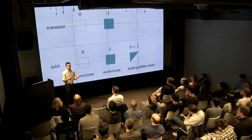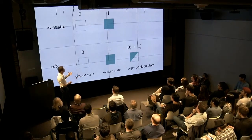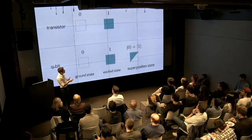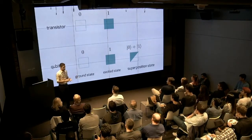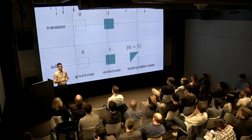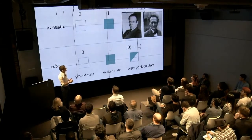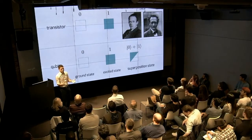Physicists like to use fancy notation. Instead of writing just zero and one, they prefer to put brackets around them. This is called Dirac notation, and it was introduced in the 1930s. Superposition state is something that was discovered many years ago by Heisenberg and Schrödinger, who introduced quantum mechanics in 1925.